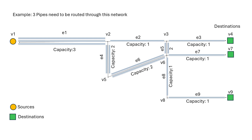This is a very simple example just for clarity — you could almost solve it by hand. We have a network of cable trays going from a source, the orange circle on the left called V1, all the way to three destinations: V4, V7, and V9. The cable trays have different widths and capacities: H1 has a capacity of 3, H2 has 1, H3 has 1, H4 has 2, and so on. The idea is how do we route those three cables from V1 to V4, V1 to V7, and V1 to V9?